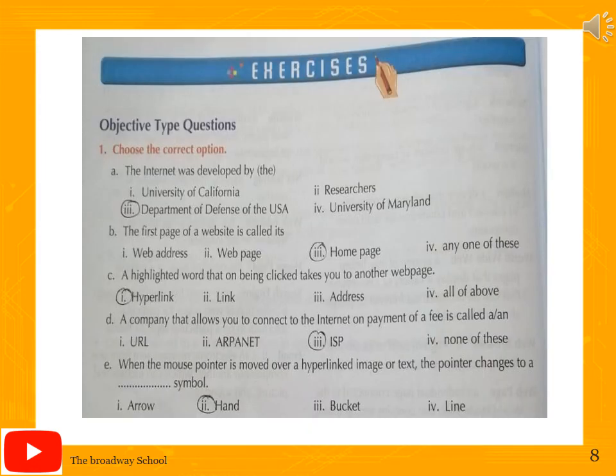Students, on page number 138 of your textbook you have an exercise. After watching the video, do this exercise by yourself. Key answers: The internet was developed by the Department of Defense of the USA. The first page of a website is called its home page. A highlighted word that on being clicked takes you to another web page is called a hyperlink. A company that allows you to connect to the internet on payment of a fee is called an ISP. When the mouse pointer is moved over a hyperlinked image or text, the pointer changes to a hand symbol.